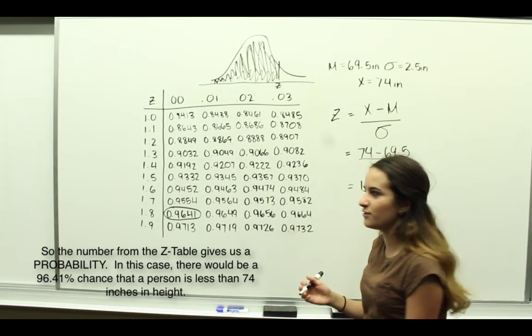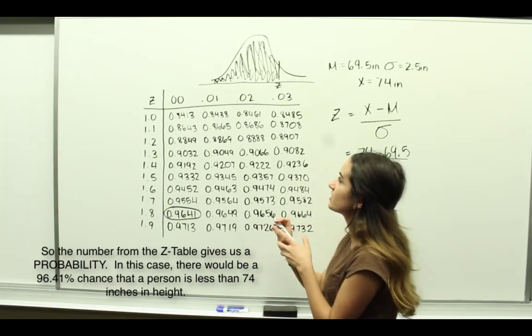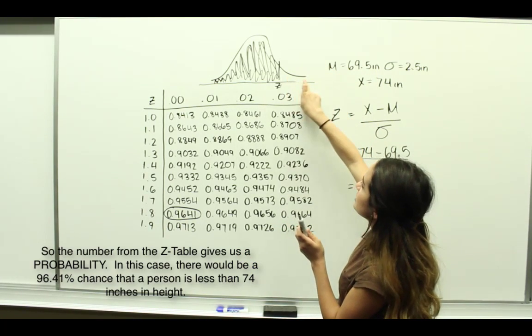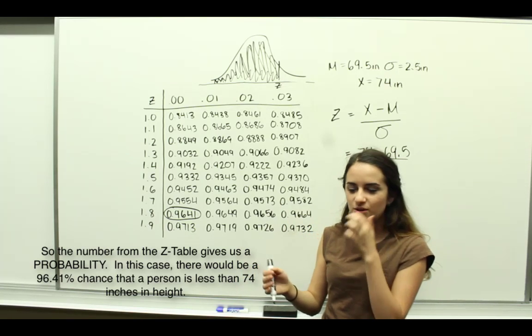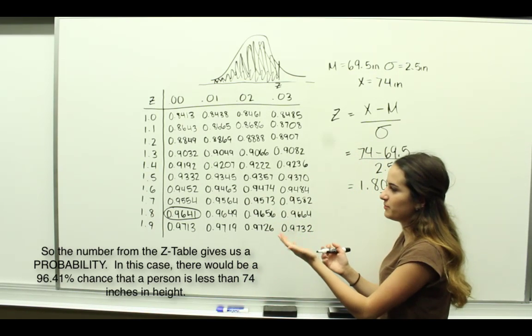That's not what we're trying to solve for. In this case we're trying to solve for this probability: the probability that someone would be 74 inches or taller than that in this population.